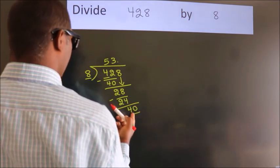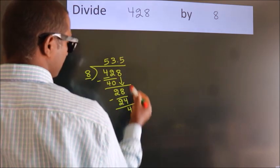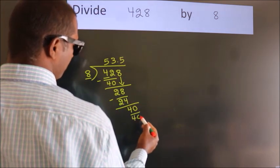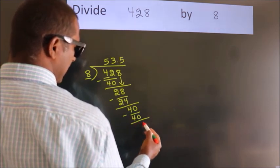When do we get 40? In 8 table, 8 fives 40. Now we subtract, we get 0.